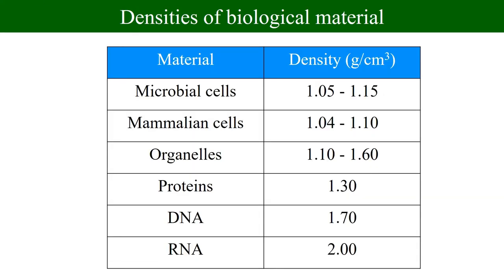The third factor affecting centrifugation is density. Looking at the density of biological materials: proteins have a density of about 1.3 g/cm³, DNA is 1.7 g/cm³, and RNA is 2.0 g/cm³. Therefore, using a density gradient material, you can very easily separate DNA from RNA because their densities are different, and similarly separate proteins from DNA molecules.